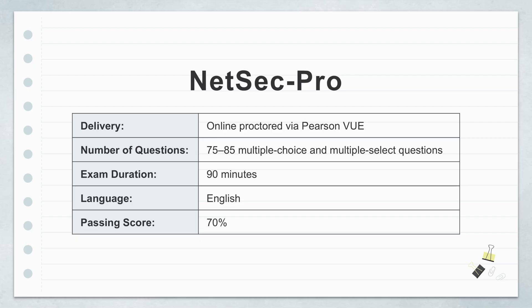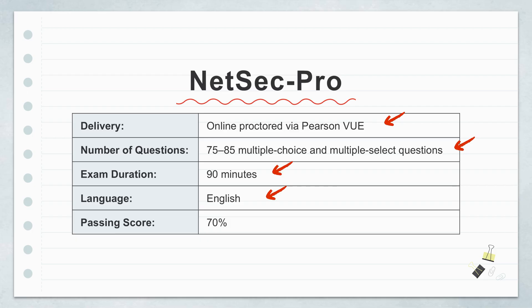Just for context, a lot of these insights are related to material for the NetSec Pro exam. Quick facts on that: it's online, proctored, 75 to 85 questions — multiple choice and multiple select — 90 minutes, all in English, and you need a 70% to pass.